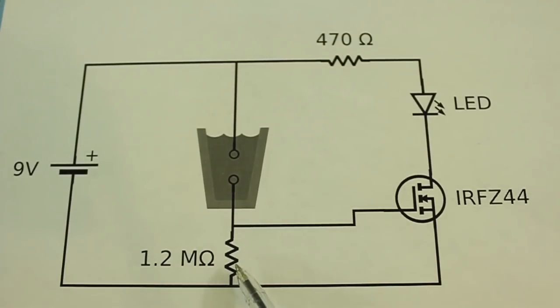This other resistor is here to turn off the transistor when the water level goes down.